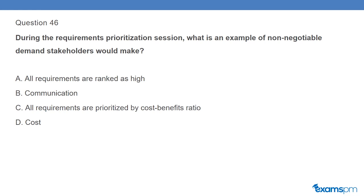Question 46: During the requirements prioritization session, what is an example of a non-negotiable demand stakeholders would make? A. All requirements are ranked as high. B. Communication. C. All requirements are prioritized by cost-benefits ratio. D. Cost.